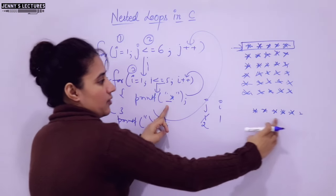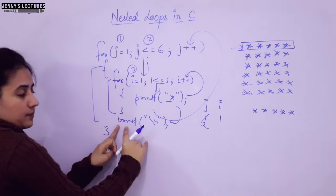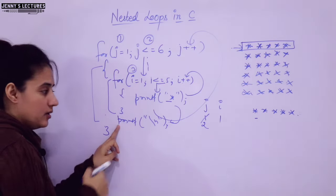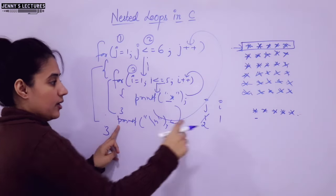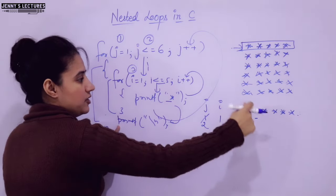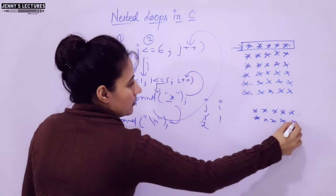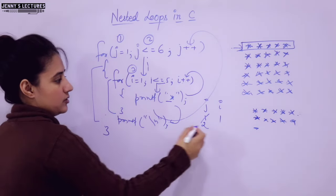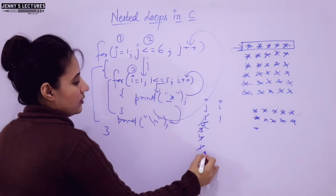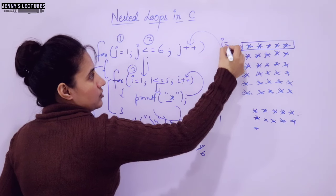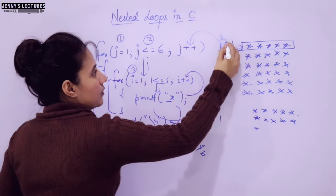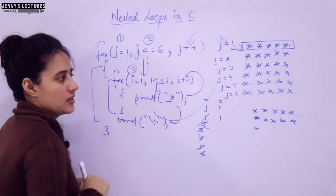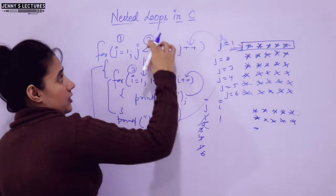Once control exits the inner loop after printing 5 stars, control goes to the statement immediately after the for loop — that is '\n'. The newline moves the cursor to the next line. Then j++. j becomes 2, condition true again, i becomes 1 again, the inner loop repeats — prints 5 stars on the second line. After exiting, again \n, cursor goes to the third line. Then j becomes 3, 4, 5, and 6. At j=6, the condition is still true, so 6 times this entire process runs.